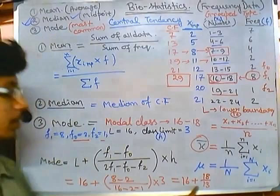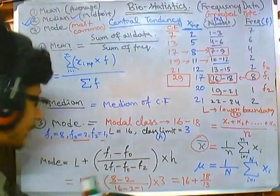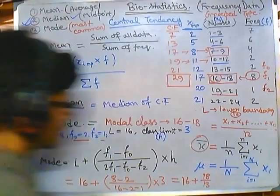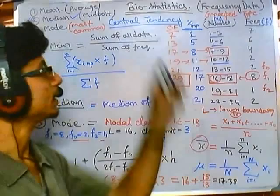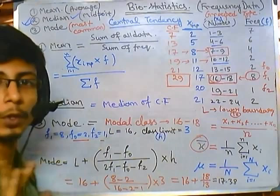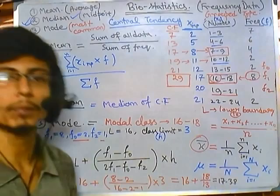Using a calculator: 18 divided by 13, plus 16, gives 17.38. So the mode of this data set is 17.38. We previously estimated the mode was somewhere in the middle of 16 to 18 by looking at the frequency table, but to find the exact value of 17.38 we needed this formula.